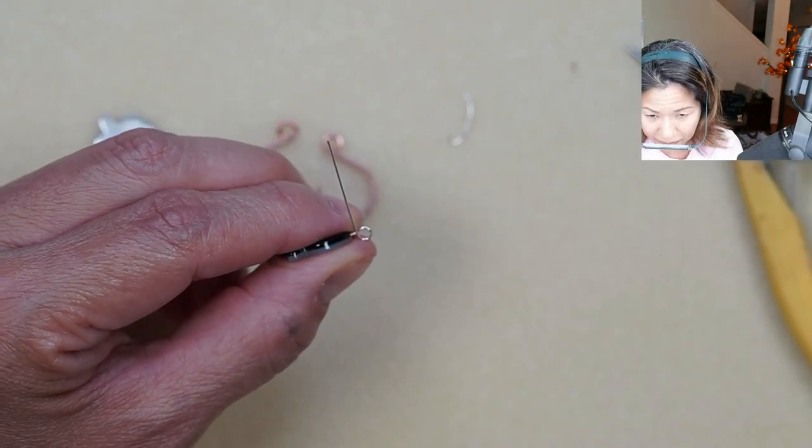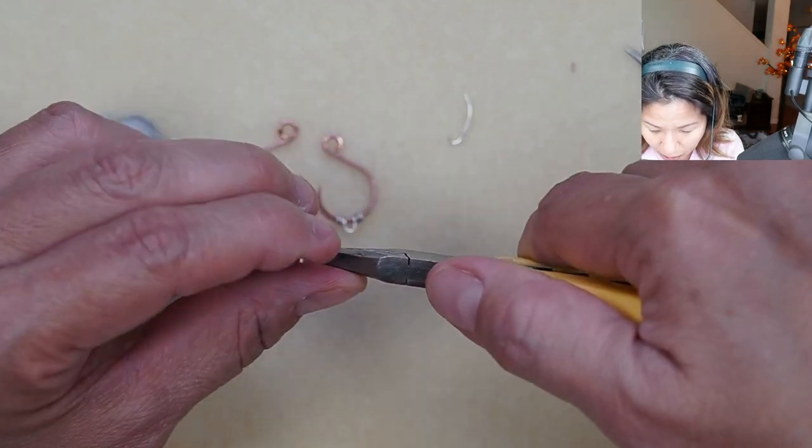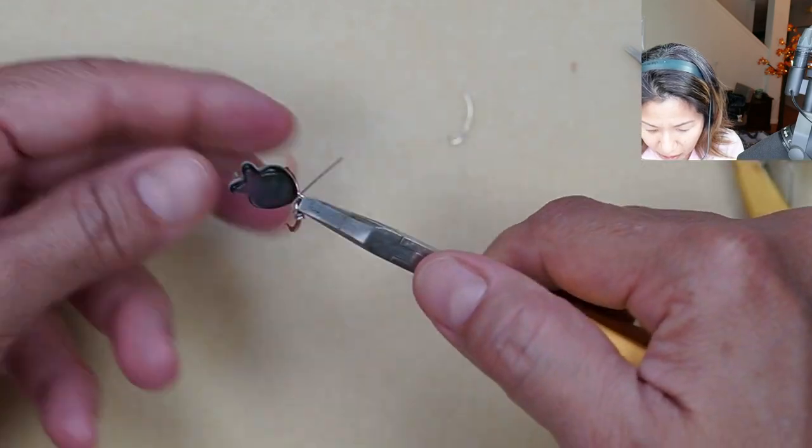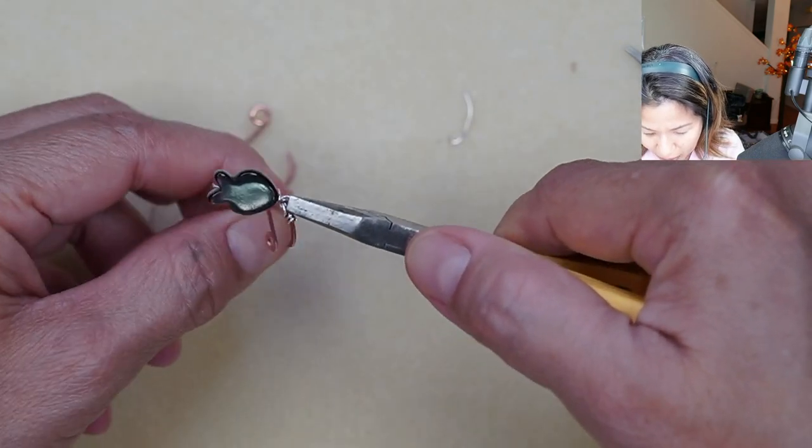With my flat nose plier I'm going to hold the loop, open that door and attach it to that loop that I made earlier and wrap it shut. Repeat on the other side.